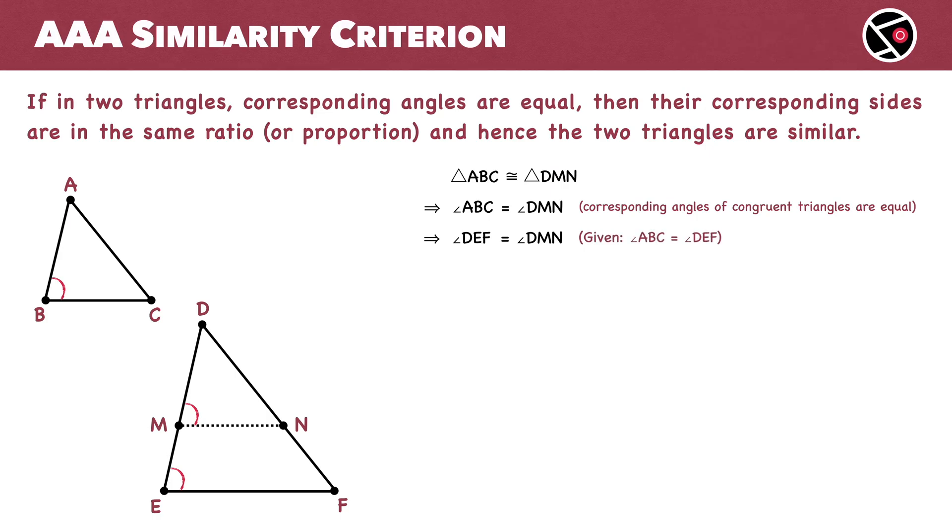Let's now look at lines MN and EF. DE is a transversal that intersects both these lines. Now, with corresponding angles DEF and DMN equal, we can conclude that MN is parallel to EF.